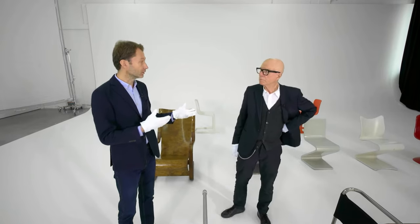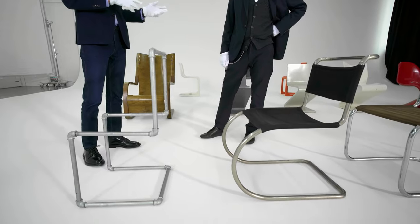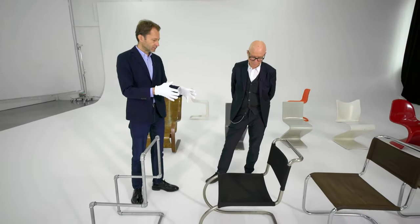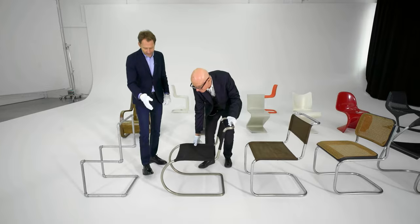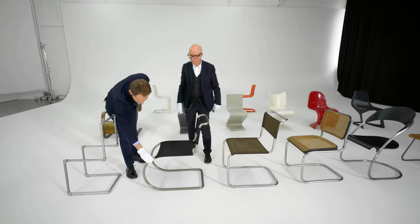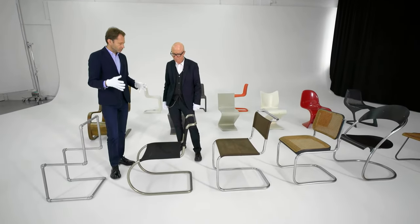Before that, tubular steel was only used for hospital furniture, military furniture. And then there was the evolution just one year later to Ludwig Mies van der Rohe's interpretation of the same typology. And the breakthrough was that Mies used cold bent tubular steel.